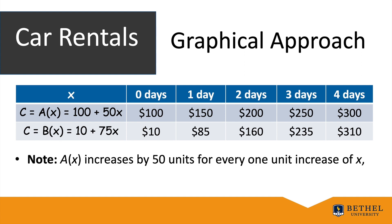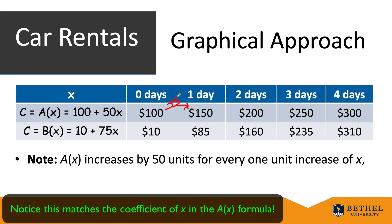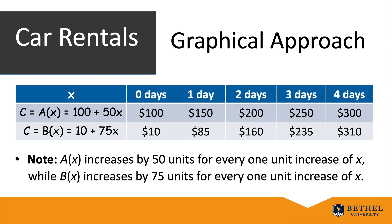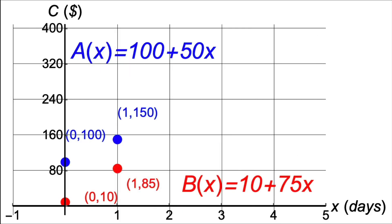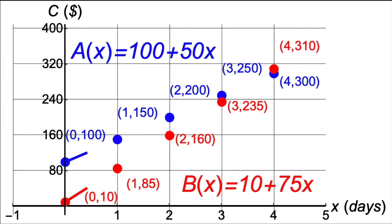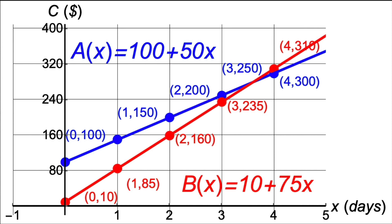A(x) increases by 50 units for every one unit increase of x — the rate of change of A(x) with respect to x is 50, a constant. That is a characteristic of linear functions. Similarly, B(x) increases by 75 units for every one unit increase of x. We plot these points in a coordinate system with axes labeled days and cost, then connect the dots with straight lines.